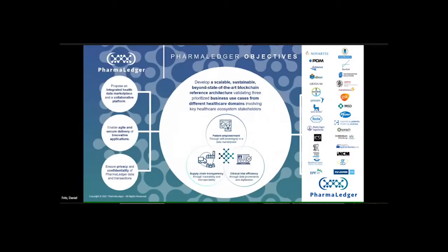The project objectives cover a sustainable blockchain architecture across three domains: health data, supply chain, and clinical trials. Today we are going to zoom in on supply chain with the EPI — electronic product information. This picture puts everything together in one view.